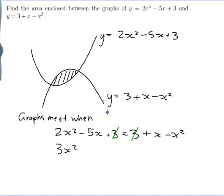So if my minus x squared moves over this side I'll have 3x squared. And I've got a minus 5x here and a plus x here. So if my plus x moves over this side as well it will become a minus x.